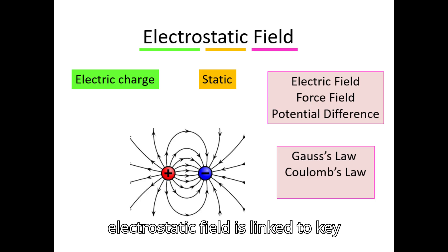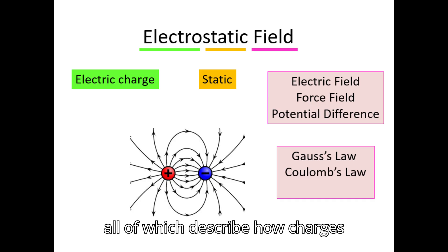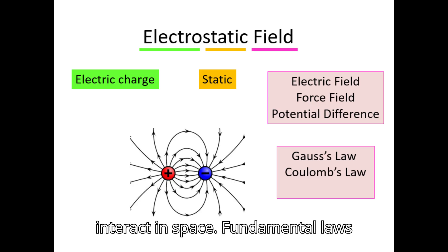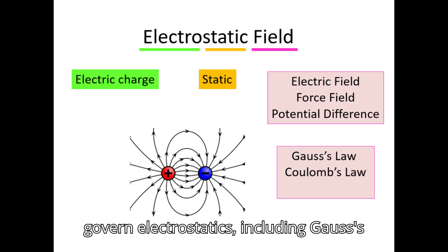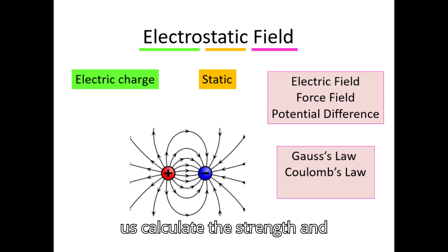The electrostatic field is linked to key concepts such as the electric field, force field, and potential difference — all of which describe how charges interact in space. Fundamental laws govern electrostatics, including Gauss's law and Coulomb's law, which help us calculate the strength and distribution of electric fields.